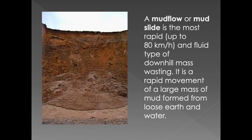Here we see an example of mudflow. Mudflow can happen quite fast — about 80 kilometers an hour. The ground becomes supersaturated and then slumps and pushes forward. Notice at the front how the mudflow rushes in underneath as it moves out. The catalytic agent here would obviously have been heavy rainfall.